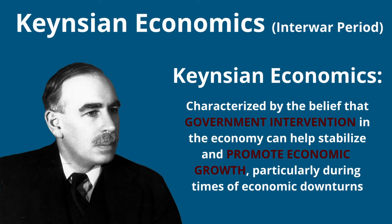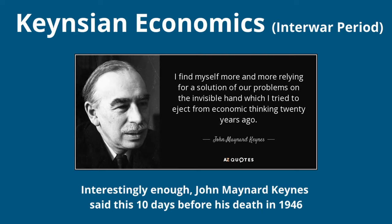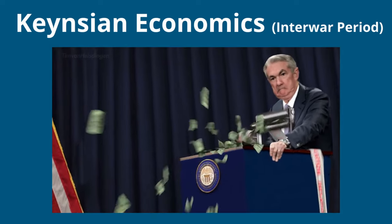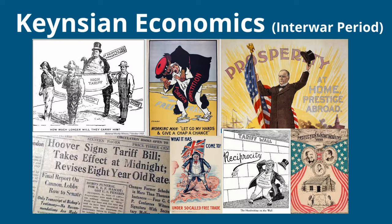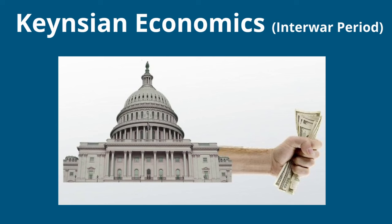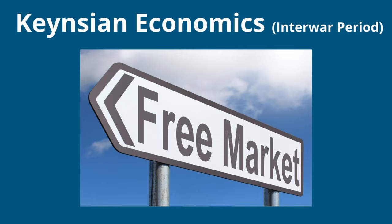Then a little thing called World War I happened, ending the era of classical liberal economics. Following the war, the flavor of the day was Keynesian economics. John Maynard Keynes believed in the importance of government intervention in the economy to promote economic growth and stability. He dissented from the classical liberal idea of the invisible hand and suggested that in times of recession, governments should spend money to stimulate the economy — the most notable example being FDR's New Deal. However, government intervention never quite reached the levels seen under mercantilism since the foundations of free market capitalism were still present.